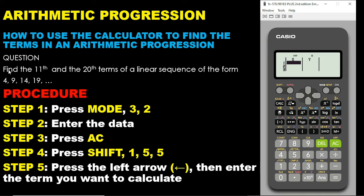Now let's go to our question. Find the 11th and the 20th terms of a linear sequence of the form 4, 9, 14, 19, and so on. So our first term is 4, the second term is 9, the third term is 14, and the fourth term is 19. When we come to the interface, under X for the first term, we put 1, and the corresponding value for the first term is 4, so under Y we put 4.